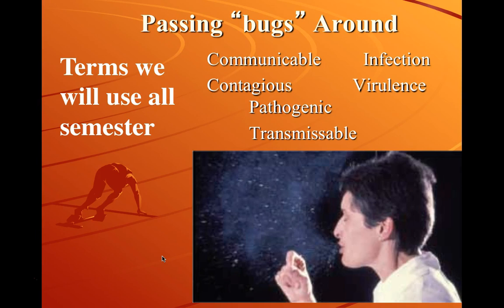Contagious refers to diseases or microorganisms that can be transferred from one person to another. If we describe something as contagious, that means the disease or infectious microorganism is easily transferred from one person to another, and that's how the term is commonly used. We often describe something as being highly contagious, which implies a fairly rapid and easy transfer from person to person.